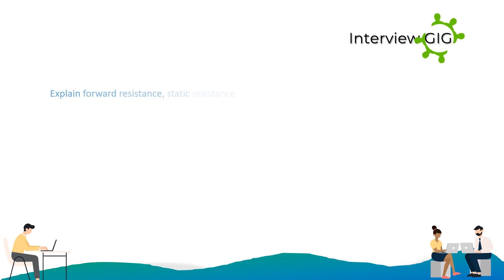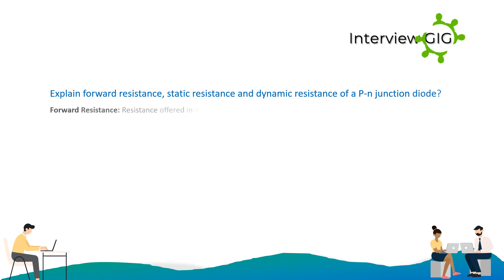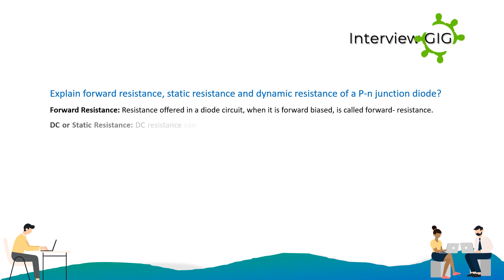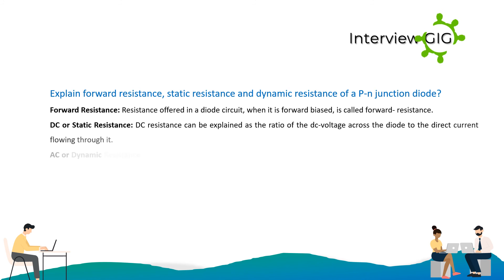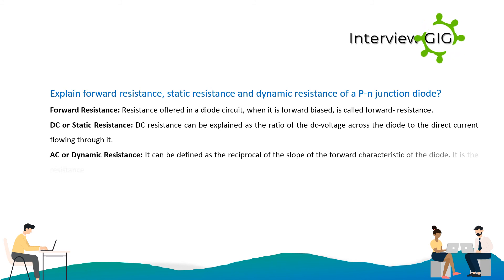Explain forward resistance, static resistance and dynamic resistance of a PN junction diode. Forward resistance: the resistance offered by a diode circuit when it is forward biased is called forward resistance. DC or static resistance: it is the ratio of the DC voltage across the diode to the direct current flowing through it. AC or dynamic resistance: it is defined as the reciprocal of the slope of the forward characteristic of the diode — the resistance offered by a diode to the changing forward current.